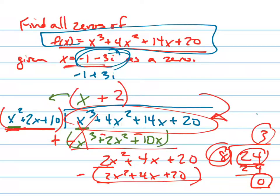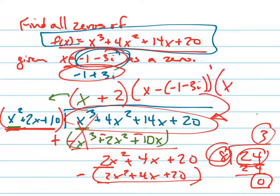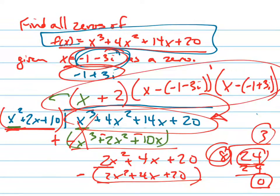They might ask you to go even a step further and say write it as a product of its linear factors, in which case you just go back and you use these two right here. And you write (x - (-1 - 3i)) times (x - (-1 + 3i)). And there's your product of factors, if they wanted that.